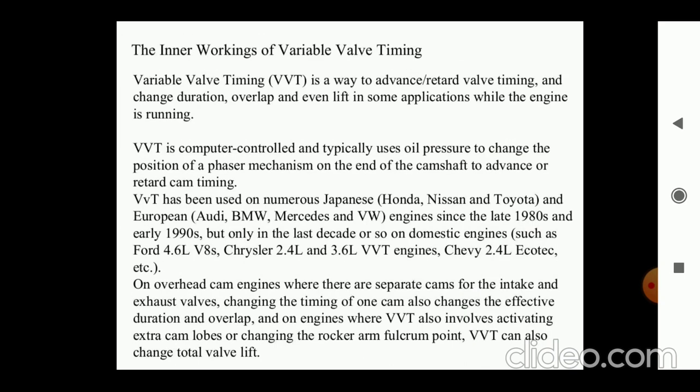Now, to overcome these all functions and to run a smooth engine, there are some very advanced vehicles which are coming in market today. They are used like this as variable valve timing. And it is the way to advance valve timing and change the duration, overlapping, and even lift in some applications while engine is running. Variable valve timing - how can they achieve which companies are implemented like this? The variable valve timing is computer controlled and typically uses oil pressure to change the position of the phase mechanism on the end of camshaft and advance or retard cam timing. Variable valve timing has been used by Japanese most of the time, like we can use vehicles in India also as Honda, Nissan, Toyota, and in Europe it is Audi, BMW, Mercedes, and many more.